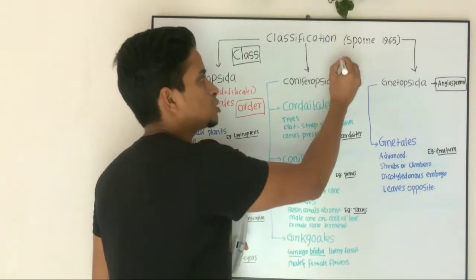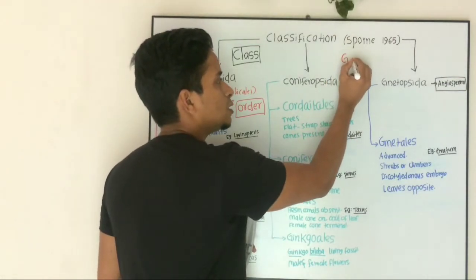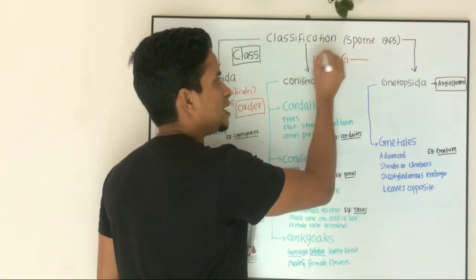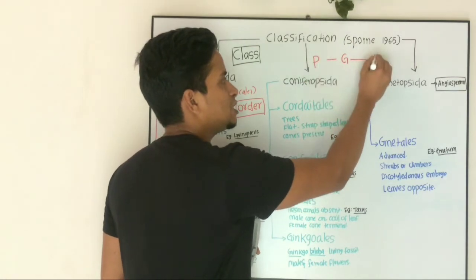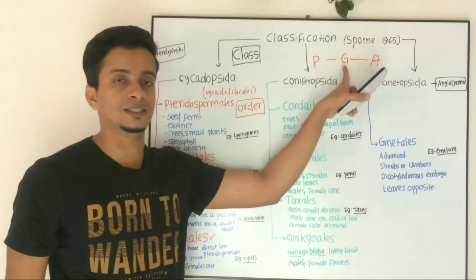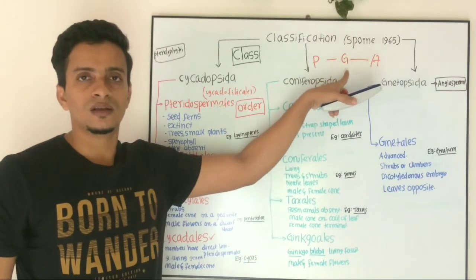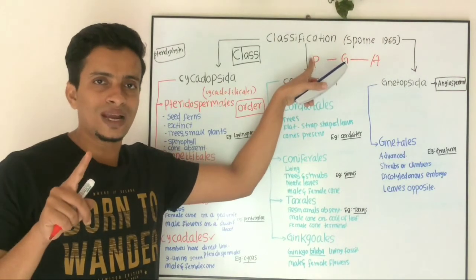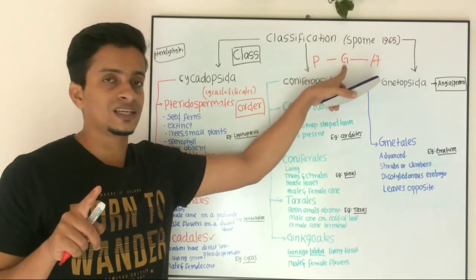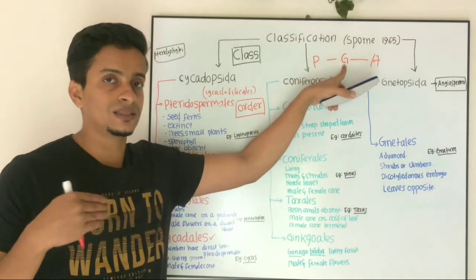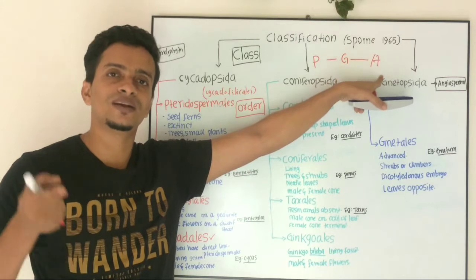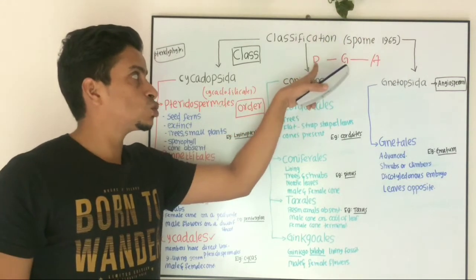If you look at the classification of gymnosperms, you can see the pteridophytes and angiosperms, and the position of angiosperms. Pteridophyte members are followed by the next evolved group, gymnosperms, and then the next evolved group, angiosperms.